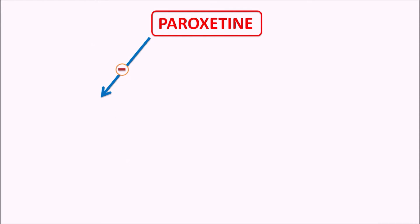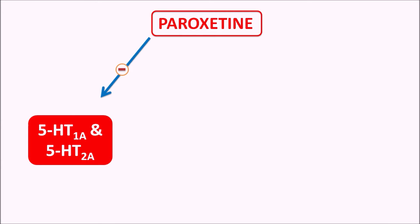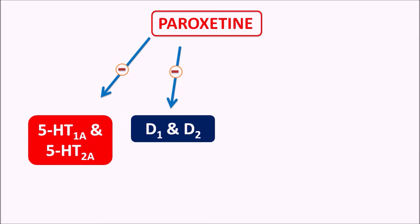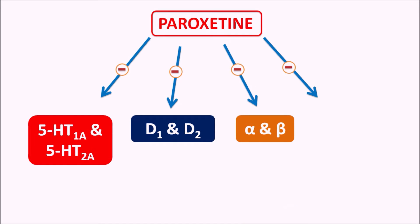Now let us see how this drug acts. Paroxetine can block multiple types of receptors: 5-HT receptors such as 5-HT1A, 5-HT2A, and 2C; dopamine receptors such as D1 and D2; adrenergic receptors such as alpha and beta; and muscarinic acetylcholine receptors, which are mainly responsible for anticholinergic side effects. It can also block H1 receptors, but all these are not attributed to its therapeutic action.